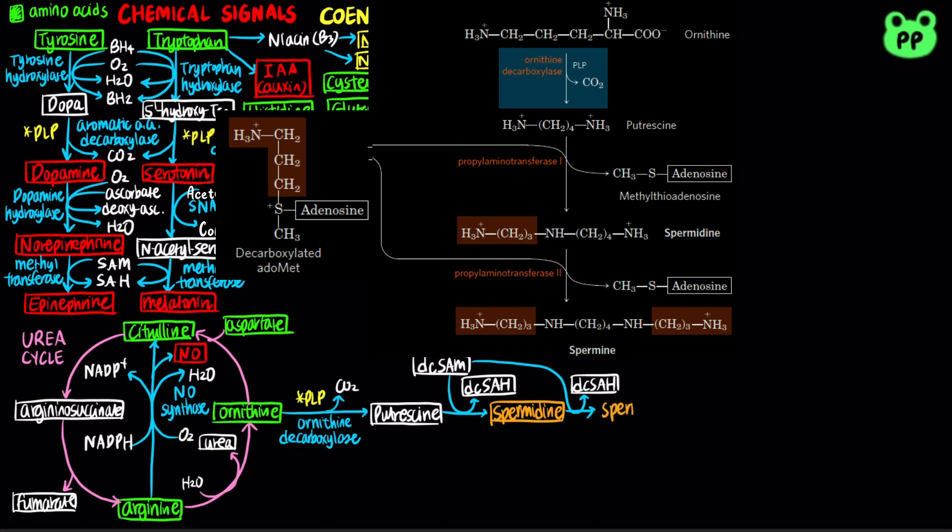PAT2 converts spermidine to spermine. Spermidine and spermine are known as polyamines that play a role in DNA packaging.